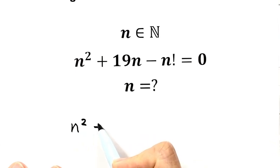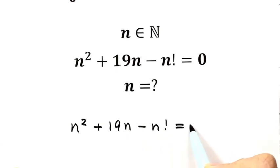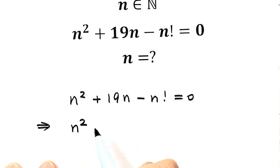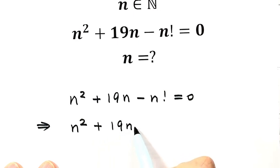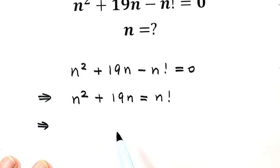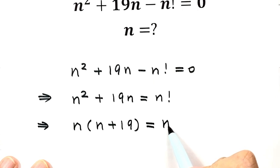Starting with n squared plus 19n minus n factorial equals zero. First, let's move n factorial to the other side, so n squared plus 19n equals n factorial. Then for the left-hand side, let's take out the common factor: n times (n plus 19) equals n times (n minus 1) factorial.